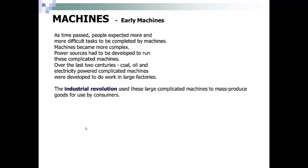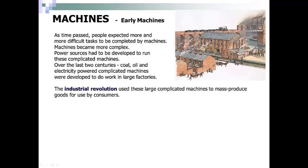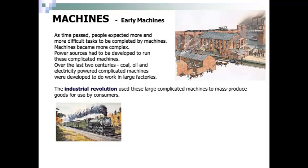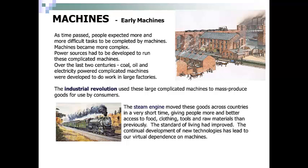The Industrial Revolution used these large, complicated machines to mass-produce goods for use by consumers. So here's a picture of an Industrial Revolution-era factory. There's a picture of a steam locomotive. The steam engine moved these goods across countries in a very short time, giving people more and better access to food, clothing, tools, and raw materials than previously. The standard of living had improved. The continual development of new technologies has led to our virtual dependence on machines.